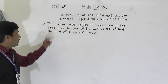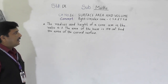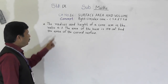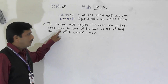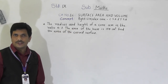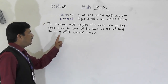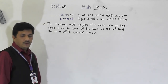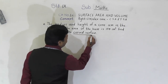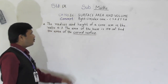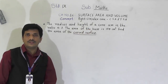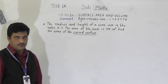Problem 1: The radius and height of a cone are in the ratio 4:3. The area of the base is 154 cm². Find the area of the curved surface. We have to find the curved surface area. The ratio of radius and height of the cone is given — note that slant height is not given, vertical height is given.